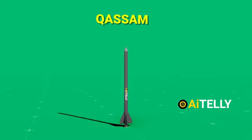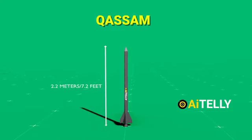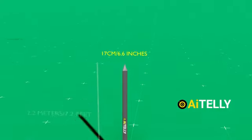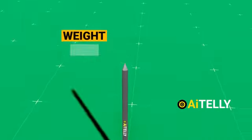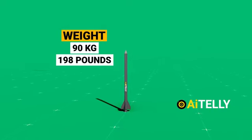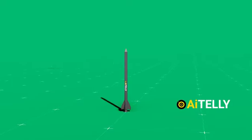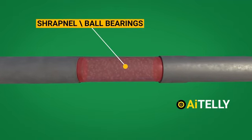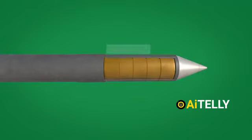This is the Qassam rocket. It measures approximately 2.2 meters in length, has a diameter of 17 centimeters, and weighs 90 kilograms, which is equivalent to approximately 198 pounds. In addition to its weight and size, the Qassam rocket is equipped with a payload of 10 kilograms, consisting of high explosives.